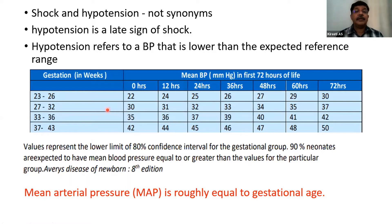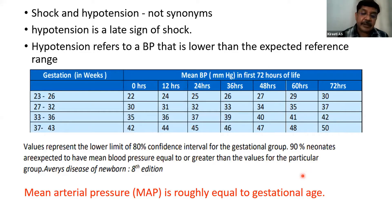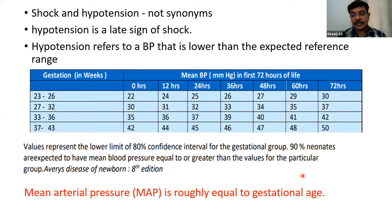By gestational age, the mean blood pressure changes after delivery. For example, at 23–26 weeks it is around 28–30 mmHg by day three. For a term baby at 37–43 weeks, mean blood pressure at birth is 42 and reaches 50 by 72 hours. A simple rule: mean arterial pressure roughly equals gestation in weeks — so at 28 weeks MAP is 28, at 37 weeks MAP is 37.